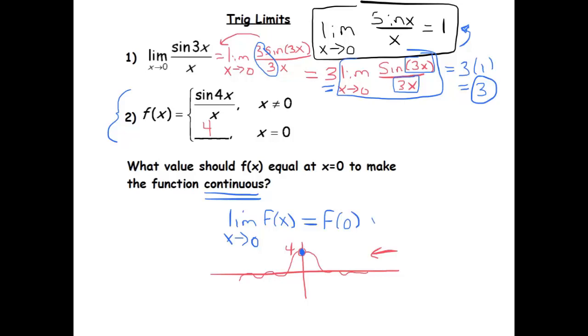And notice now this holds, right? The limit as x goes to 0 is clearly 4, looking at the graph, and f of 0 is also 4 because we just made it 4. So it checks out.